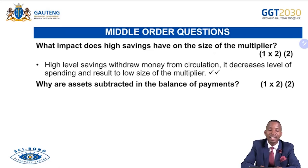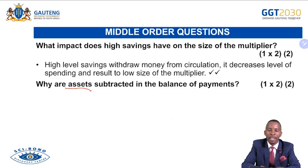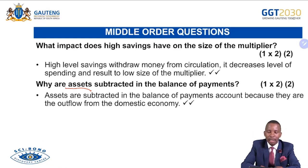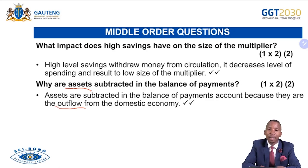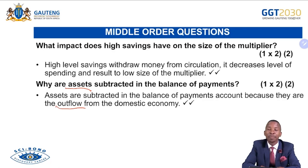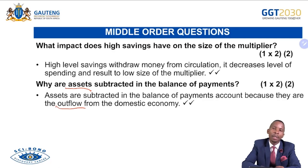High levels of savings withdraw money from circulation, decrease the level of spending, and result in a low size of the multiplier. 'Why are assets subtracted in the balance of payments?' Assets are subtracted because they are the outflow of money from the domestic economy. Money flowing into the country is recorded positively as liabilities because the future gains will be enjoyed back in the country of origin. Assets represent money flowing out, but the future benefit of that investment will be enjoyed in South Africa — so it's called an asset because assets accumulate.